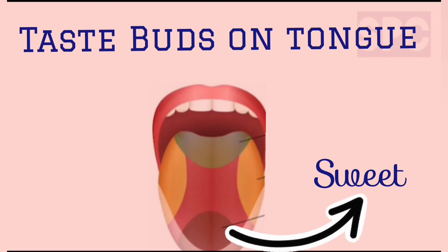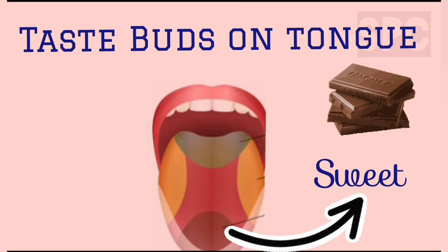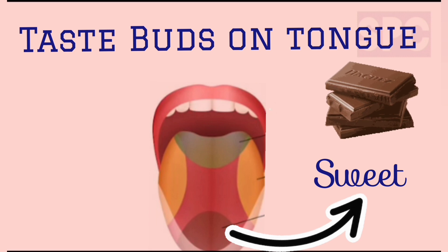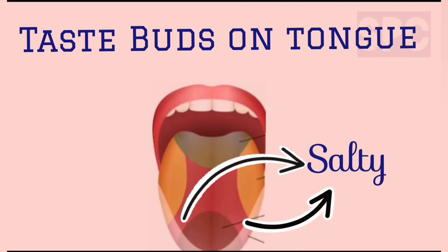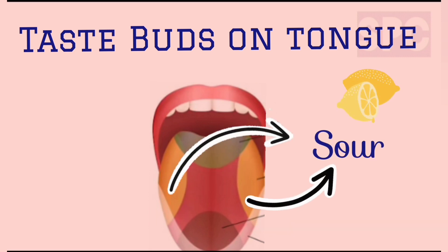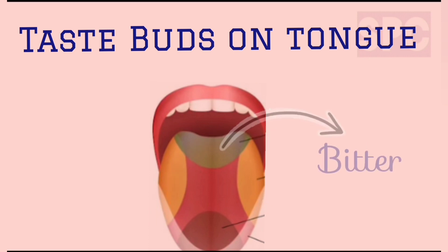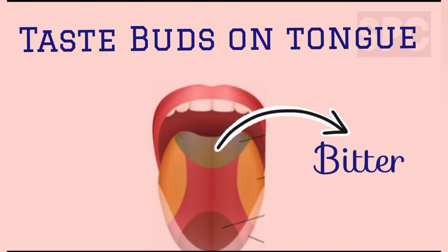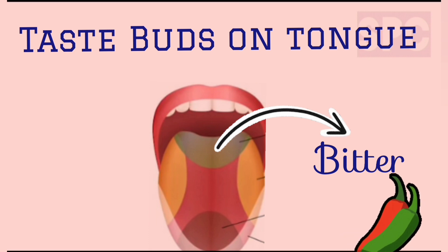The taste buds at the tip of the tongue help us detect sweet taste, like chocolate. The taste buds on the sides of the front part detect salty taste. The taste buds on the left and right sides detect sour taste, like lemon juice or gooseberries. The taste buds on the back of the tongue detect bitter taste, like pepper or bitter gourd.